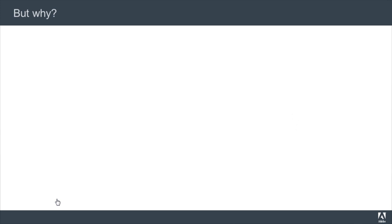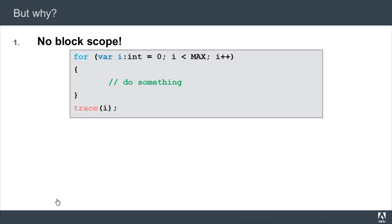First, there is no block level scoping in ActionScript. Take a look at this example. We have a for loop, and within that for loop, we declare a variable i. If you come from a Java or C++ background, then you are used to the idea of block level scoping. That is, for this example, the scope of the variable i is confined to within those two braces. However, ActionScript does not support block level scoping, and so the scope of the variable i extends past the brace.